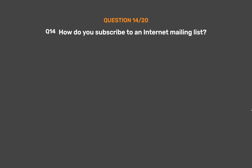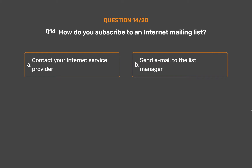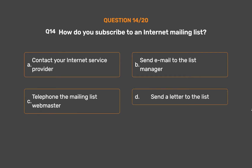Question number 14. How do you subscribe to an internet mailing list? Option A: Contact your internet service provider. Option B: Send email to the list manager. Option C: Telephone the mailing list webmaster. Option D: Send a letter to the list.